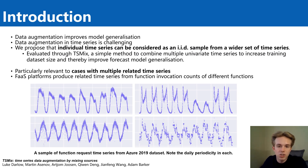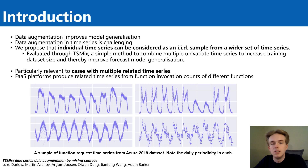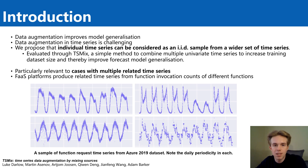Data augmentation is a common strategy for improving the generalization ability of neural networks. For example, data augmentation for images is straightforward, with simple techniques such as cropping, flipping, and color augmentations. However, data augmentation in time series is more challenging because an individual data point is part of a sequence which is more difficult to augment realistically.